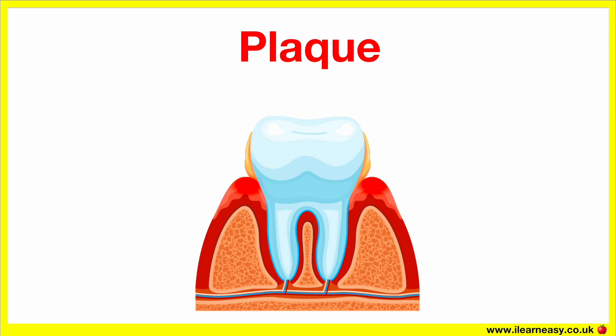After eating, bacteria in your mouth feed on sugars. The bacteria produce acids as a by-product. These acids attack your enamel, leading to caries, which is tooth decay, and gum disease if the plaque is not removed.